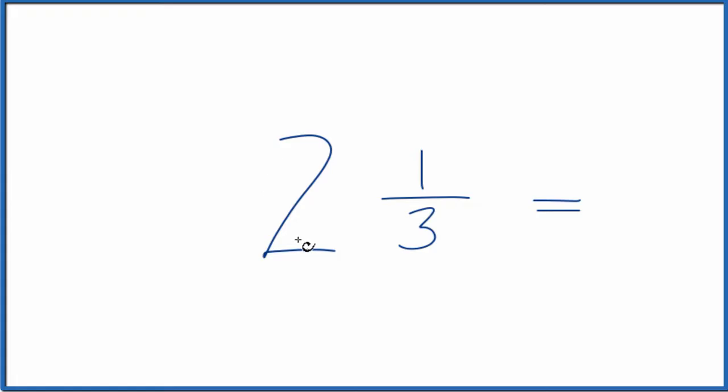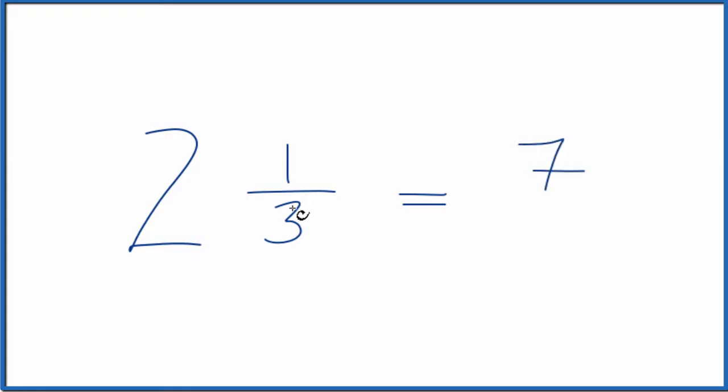You take the whole number and multiply it by the denominator, 2 times 3. That gives us 6, and you take that and add to the numerator. 6 plus 1 is 7. Just bring the denominator across: 7 thirds.